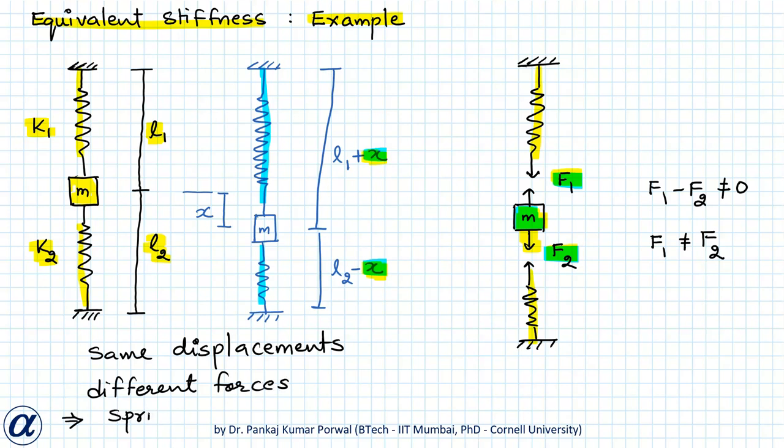So their equivalent stiffness will be given by k1 plus k2. Note carefully that even though the springs appear to be in series, because of the configuration of the mass, the springs actually turn out to be in parallel, and the equivalent stiffness for this system will be k1 plus k2.